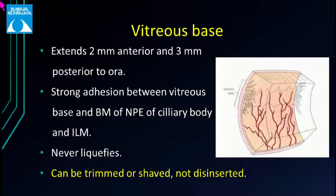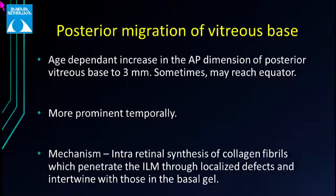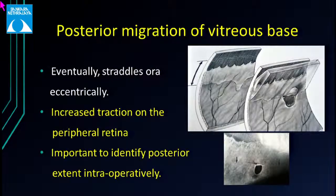The vitreous base is an area of firm attachment to the retina, extending 2 mm anterior to the ora into the pars plana and 3 mm posterior to it. It has strong adhesions with the basement membrane of the non-pigmented epithelium of the ciliary body and the ILM of the retina. It never liquefies, so intraoperatively we can only trim or shave it but not disinsert it. There is an age-dependent posterior migration of the vitreous base, which can reach up to the equator and is more prominent temporally. The mechanism involves intra-retinal synthesis of collagen fibrils that penetrate through localized ILM defects and intertwine with collagen fibrils in the basal gel.